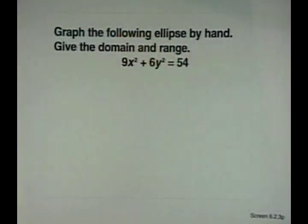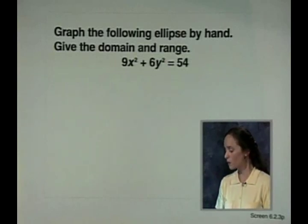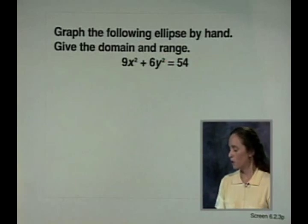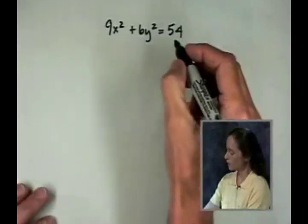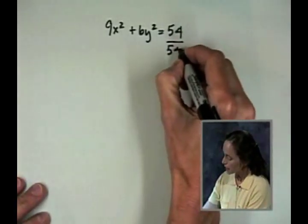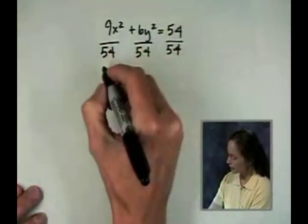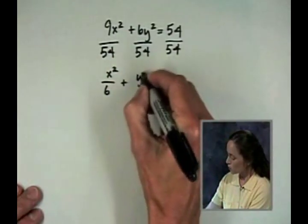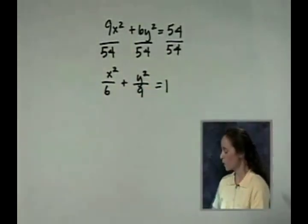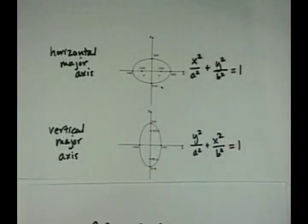Let's use those two pictures and work an example to graph an ellipse by hand. We want to graph this ellipse, state the domain and range, and match it with one of the two standard forms. We need to divide each part of the equation by 54. Simplifying, I end up with x squared over 6 plus y squared over 9 equals one.